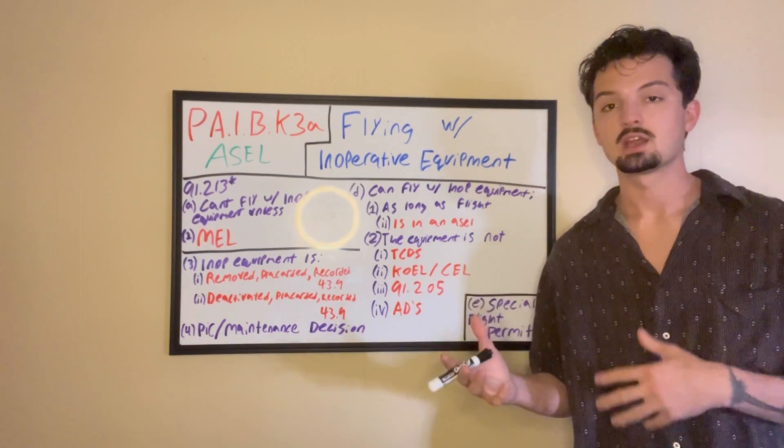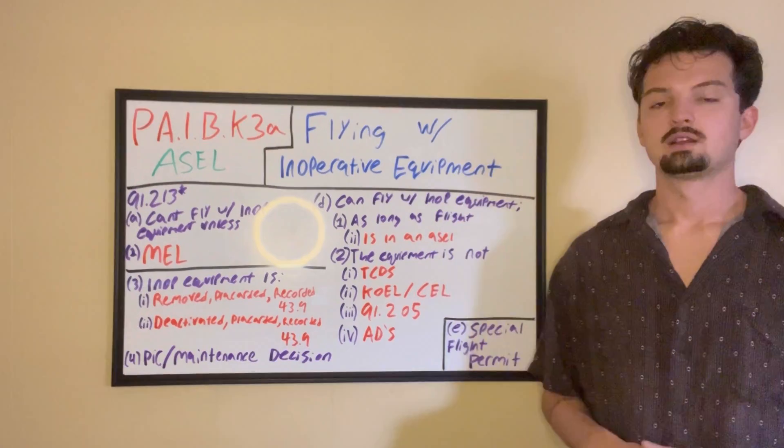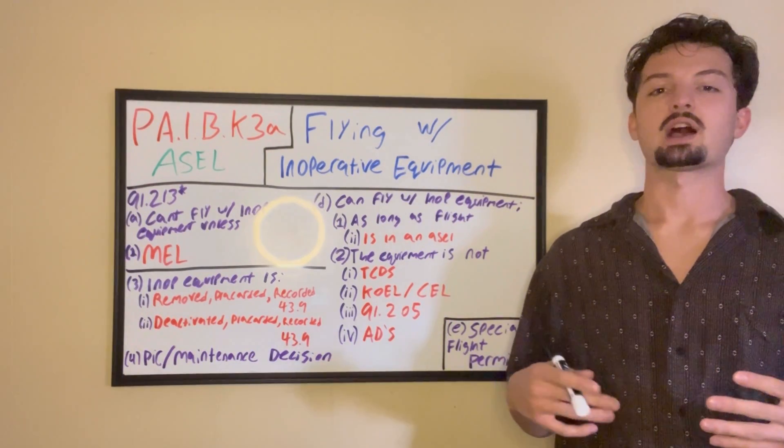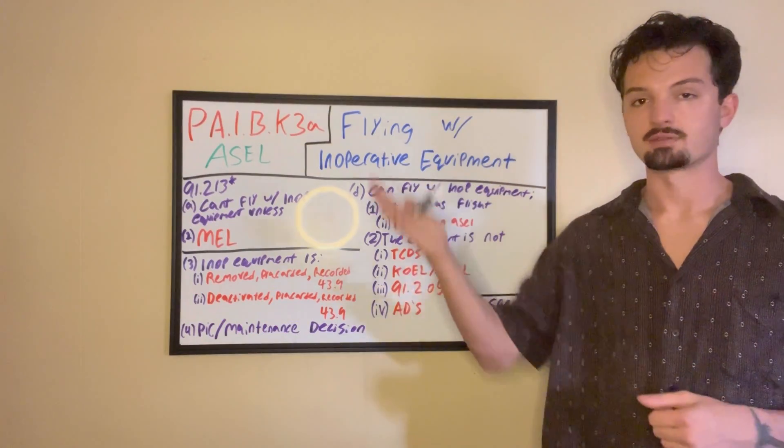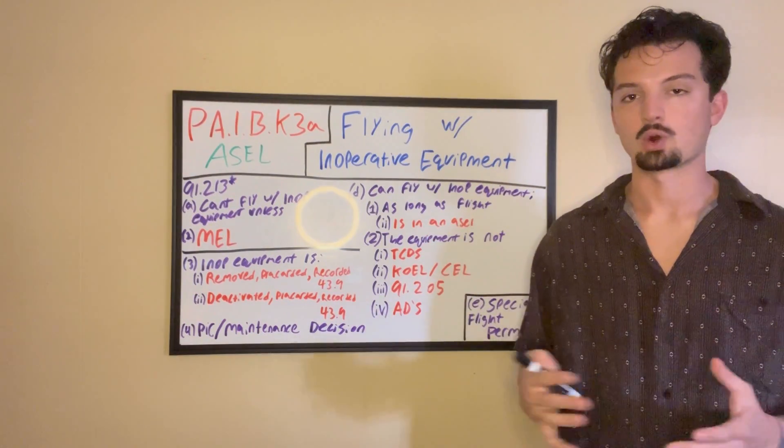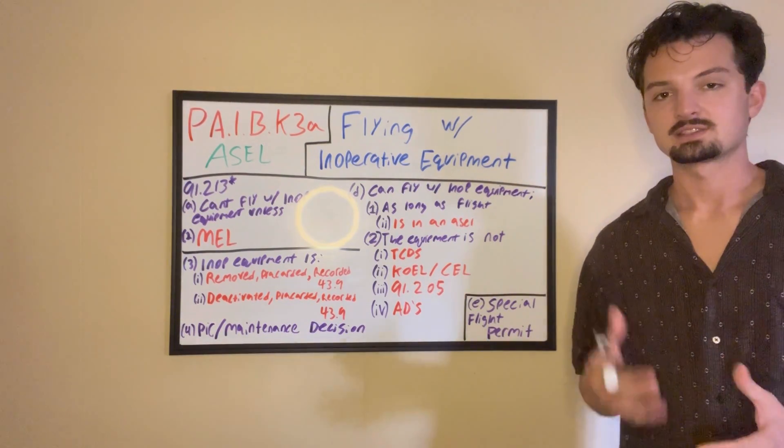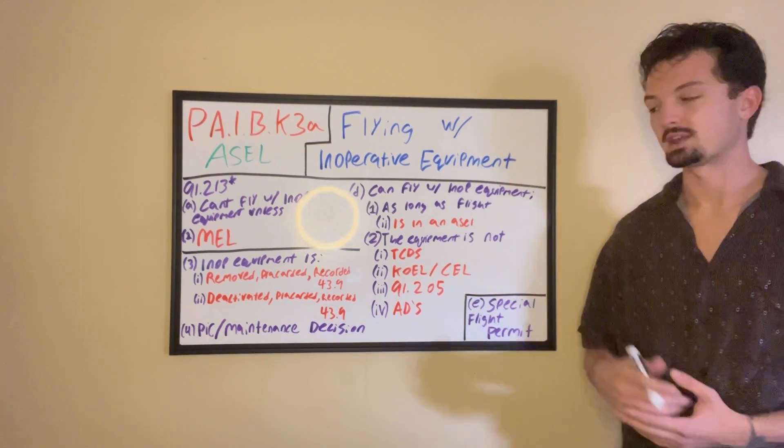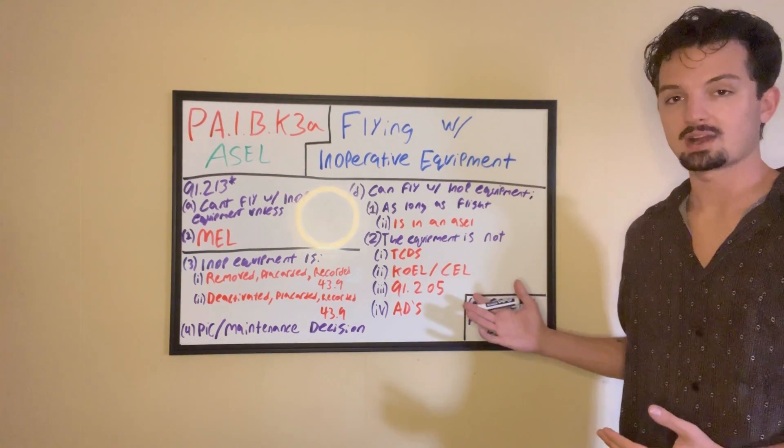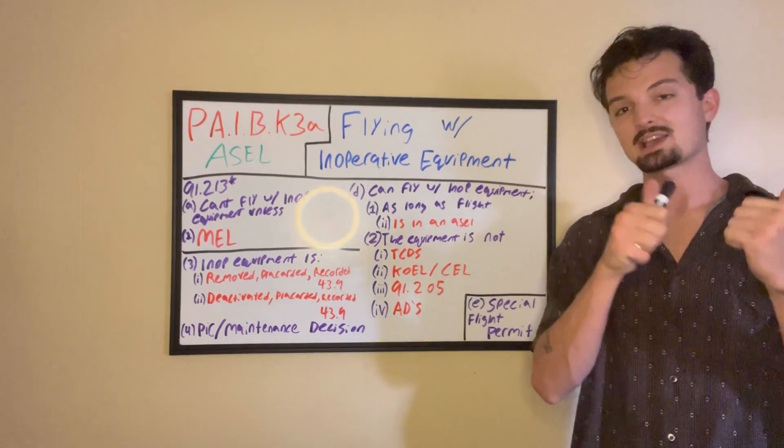The kinds of equipment list is similar, but it's also listing what equipment is required for the type of operation you're doing. So whether it's day or night operations or instrument conditions, the K-O-E-L is going to specify what equipment you need for what kind of operation. The C-E-L is just listing everything and telling you whether or not it's a required piece of equipment. But if you don't find your answer in the T-C-D-S, K-O-E-L, or C-E-L, next you're going to want to think of 91-205.